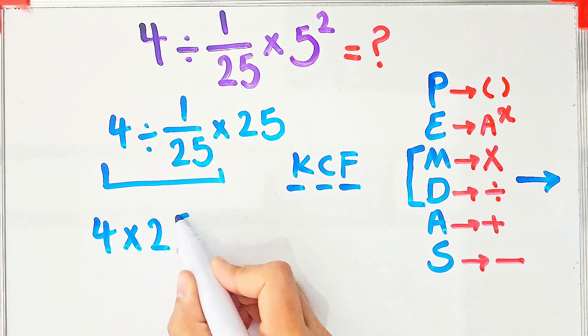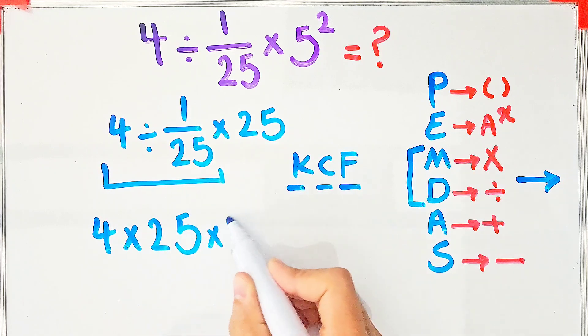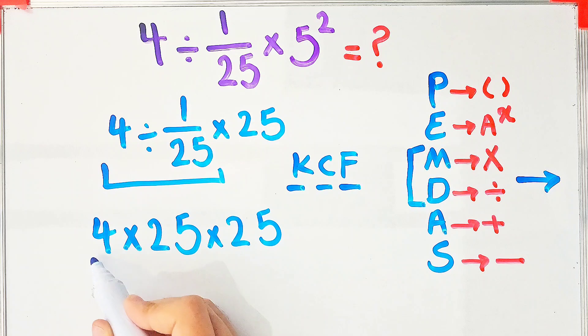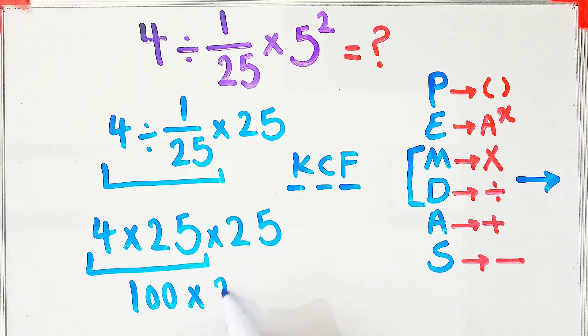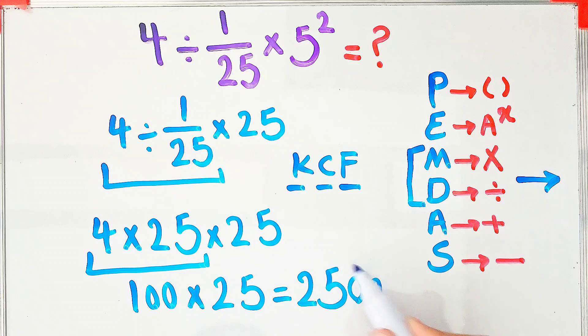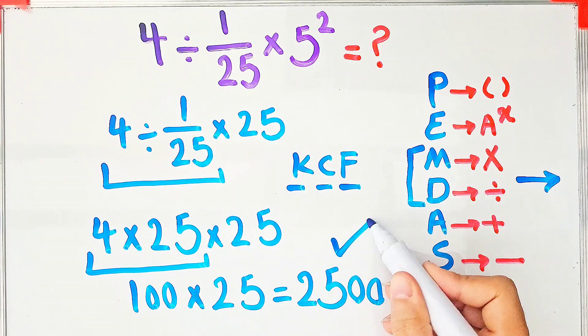Now we start from the left and do the multiplications: 4 times 25 equals 100, and 100 times 25 equals 2500. Thanks for watching guys, please subscribe to the channel and leave a comment. Goodbye!